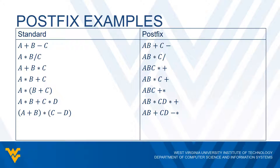For (A plus B) times (C minus D), we add A and B first, then subtract C and D, then multiply the two results together. In postfix notation, the A plus B part is A, B, plus. Then we handle C minus D as C, D, minus. Those give us two results, and then we tack on the multiplication symbol at the end.